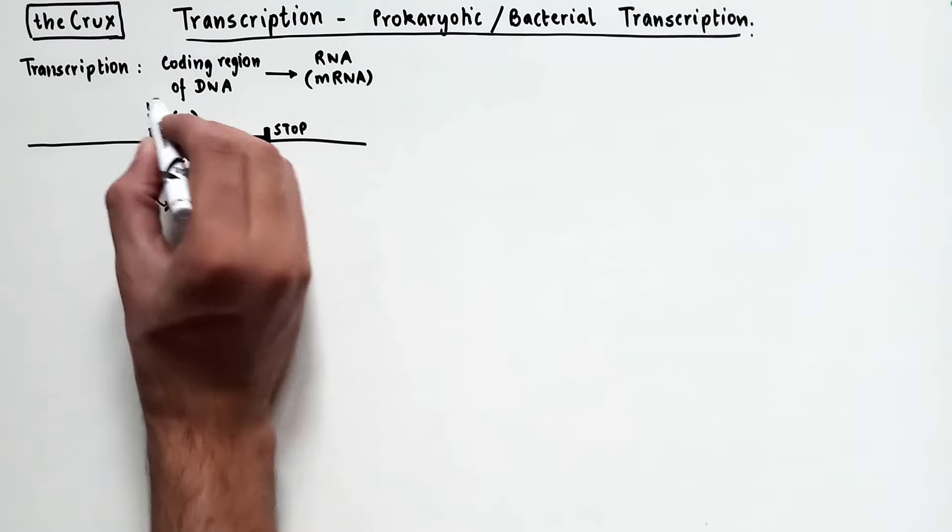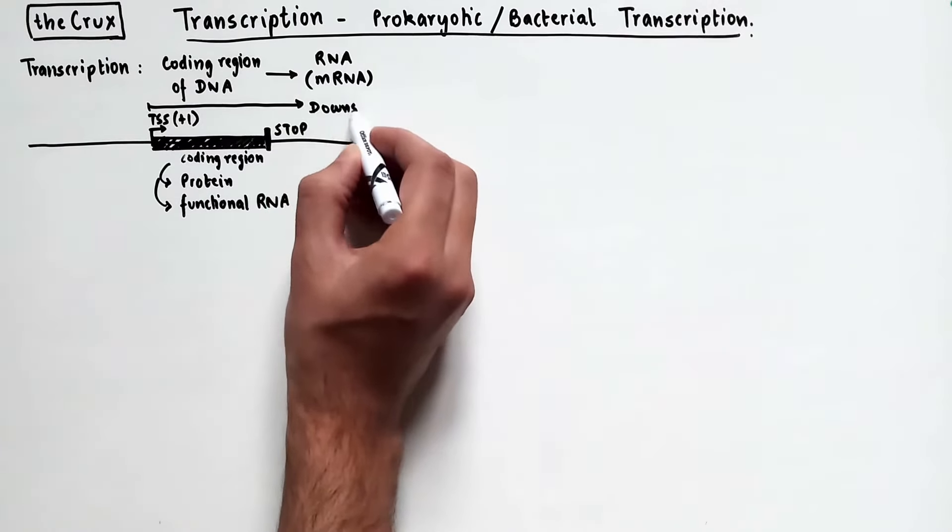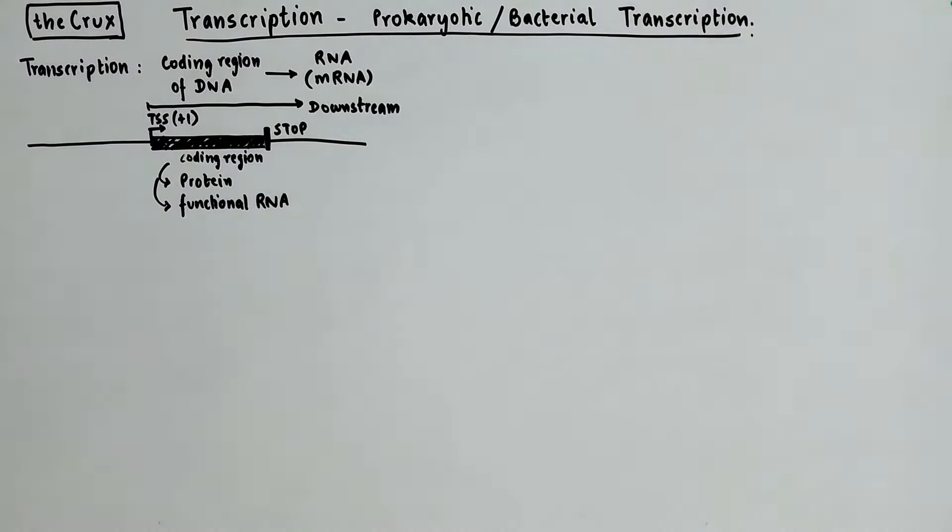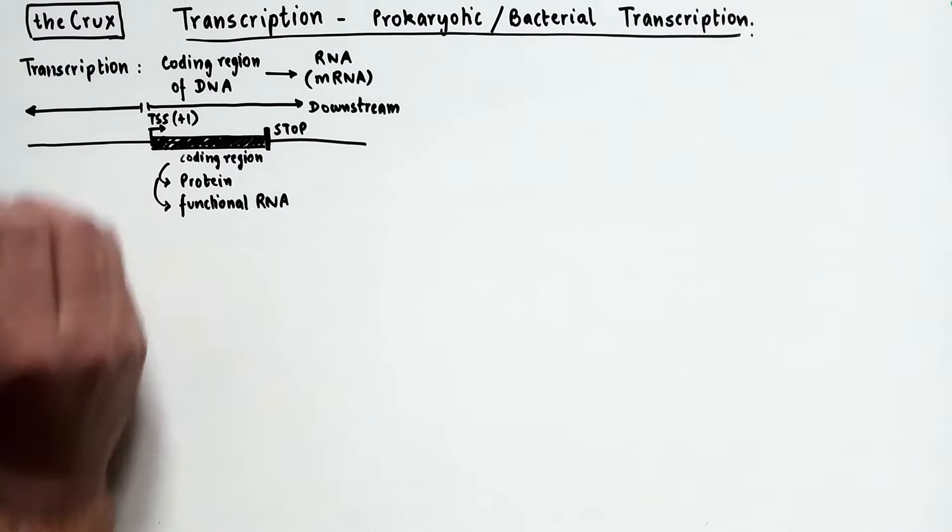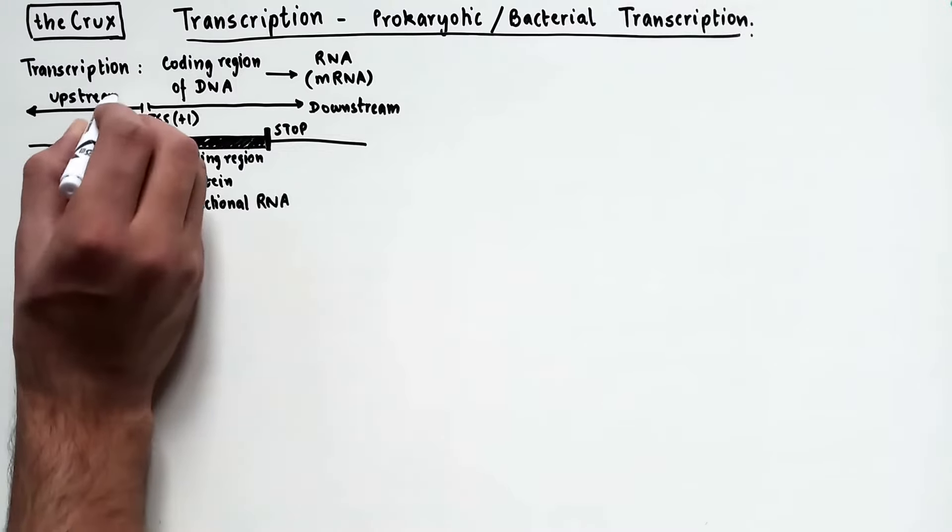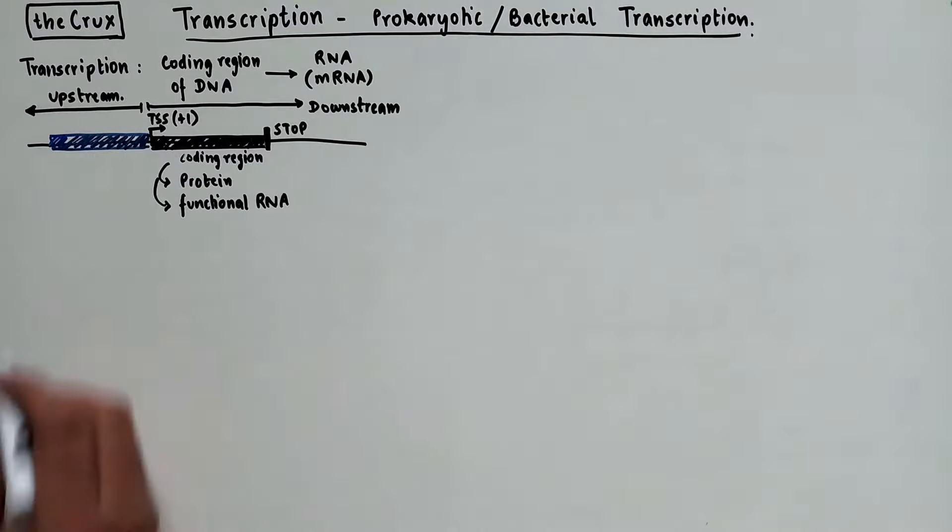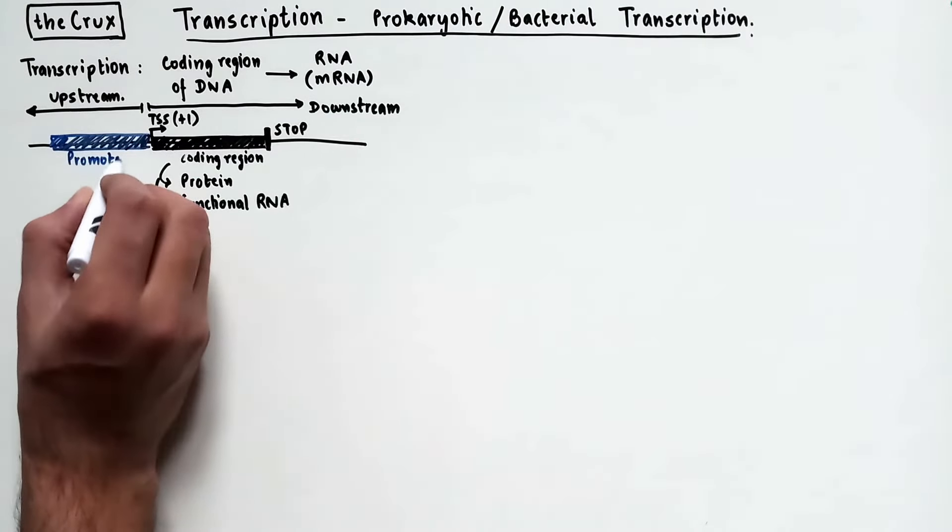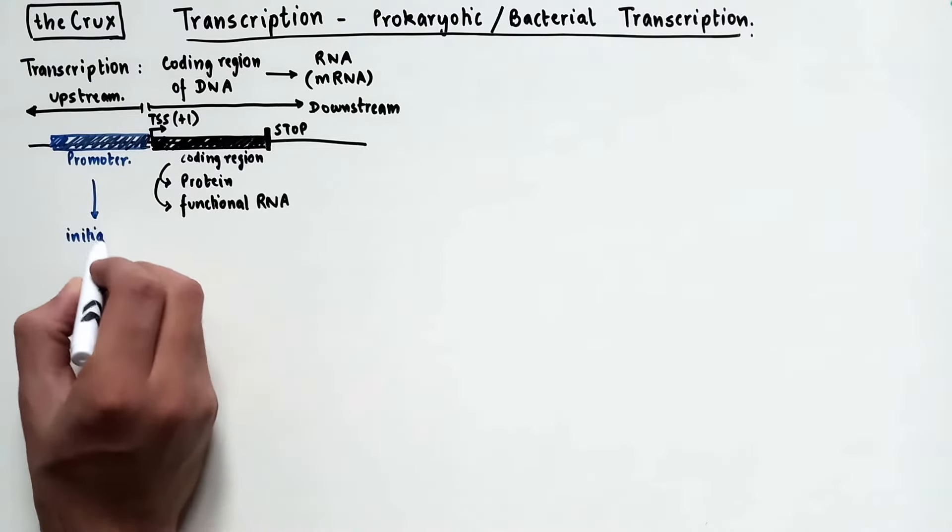Now, from our reference set at the TSS, we call all things towards the end of the coding region downstream. And likewise, all the things before the plus one site are considered upstream. One important piece of DNA that is located upstream of the TSS is the promoter region. And promoter is involved in promoting, or initiating, the process of transcription.